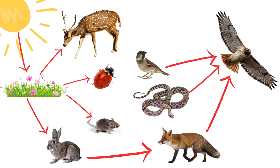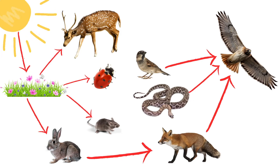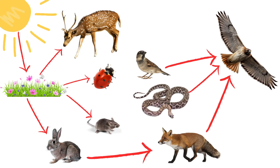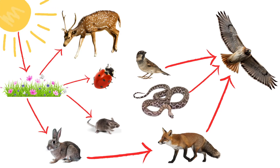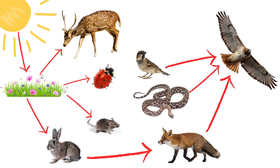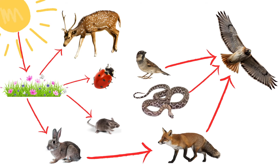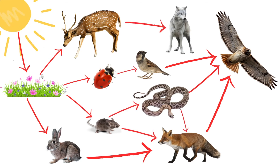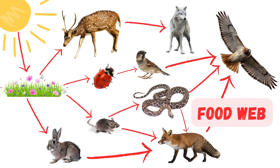These overlapping connections form a web of life, where each organism plays a role in maintaining balance in the ecosystem. Let's explore how this works by adding more animals and feeding relationships to build a more complete food web.